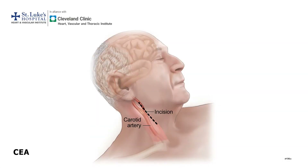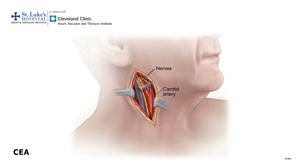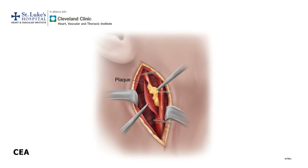Carotid endarterectomy, also performed commonly under general anesthesia, involves an incision made directly overlying the area of disease in the carotid artery. Care is taken to dissect out the carotid artery away from the surrounding nerves and venous structures.